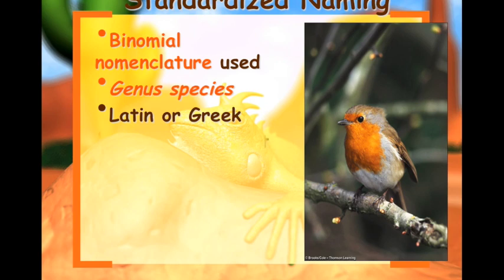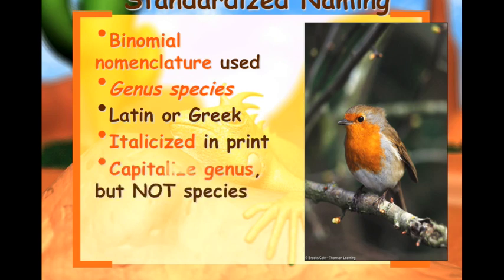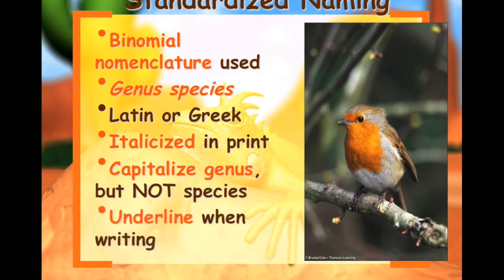It's Latin or Greek. It's italicized in print — so if you're reading it on a computer screen or in a book, it'll be italicized. We're going to capitalize the genus but not the species. And if you're going to handwrite it, you need to make sure you underline it.